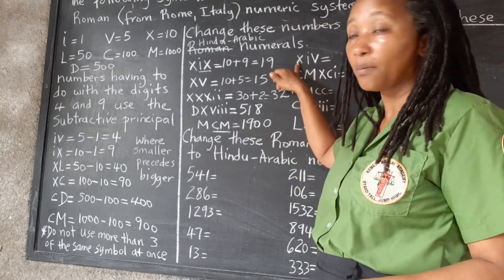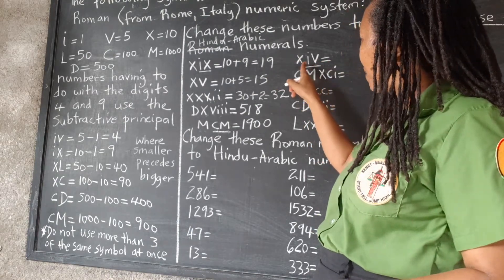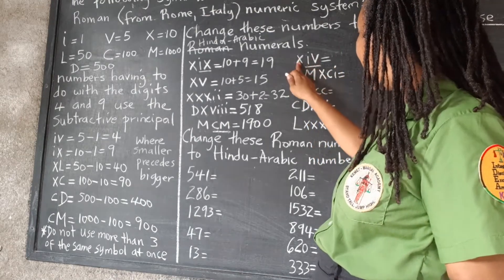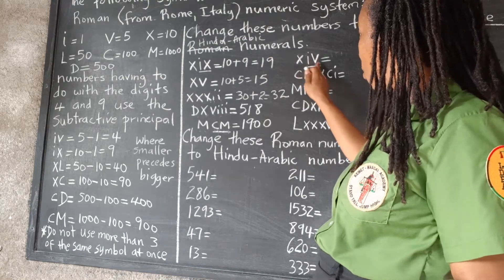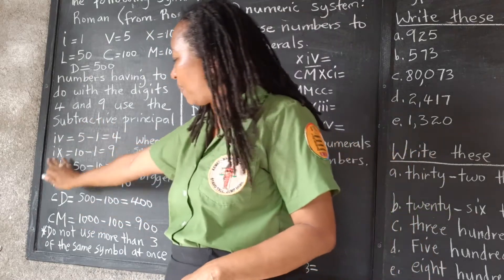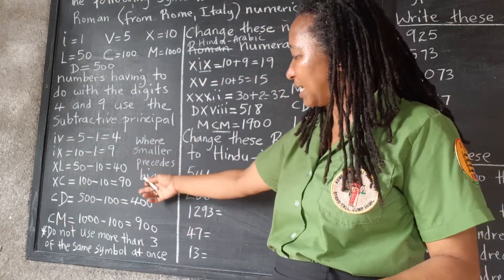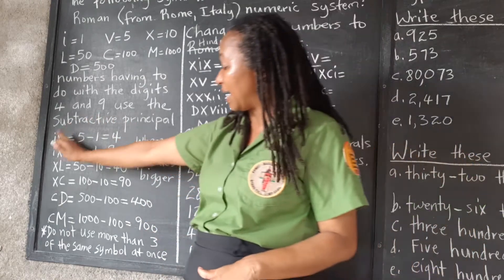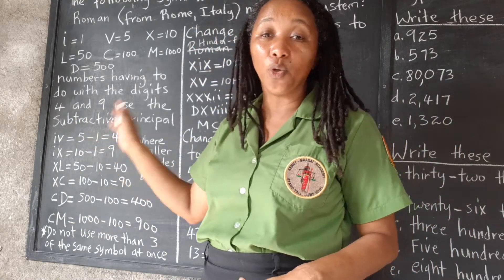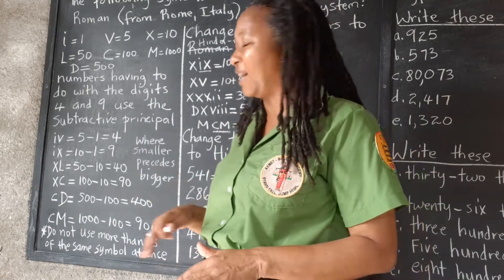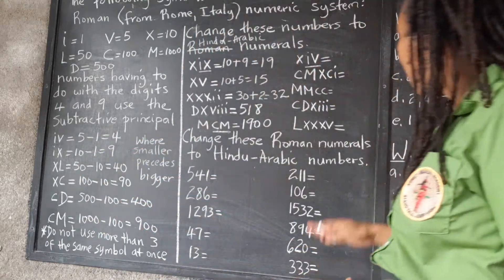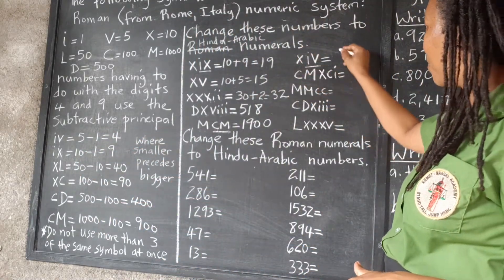Here we have a 10, but we also have the subtractive principle: 1 comes before 5, so we subtract. 5 take away 1 is 4. So 10 plus 4 is 14. If you understand these six special cases — 4, 9, 40, 90, 400, 900 — and know them by heart, you won't even have to calculate each time. So that's 10 plus 4, which is 14.